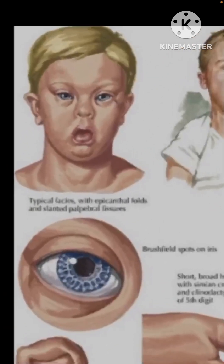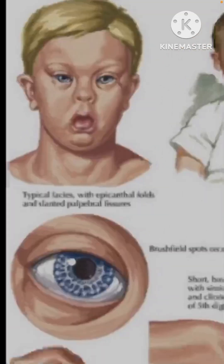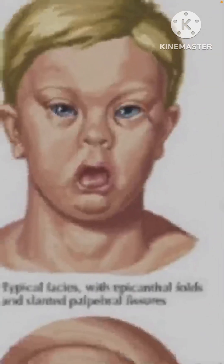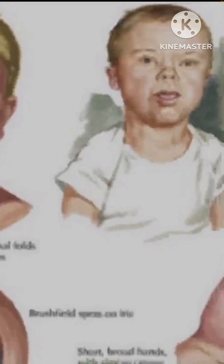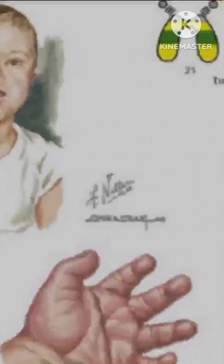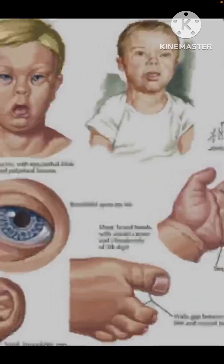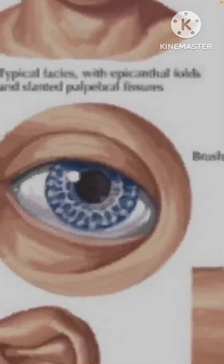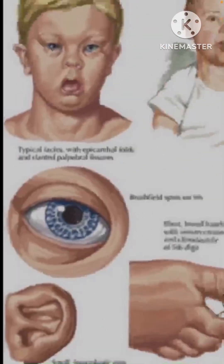In terms of physical features, you have the typical features we call epicanthic folds — the fold in the eyes — and wide-set eyes with a medial slant towards the nose. A prominent tongue is a very important feature seen in quite a few babies. The face is square-shaped and the back of the head is flat, which we call brachycephaly. In the eyes, you may notice Brushfield spots, which are white spots in the iris.